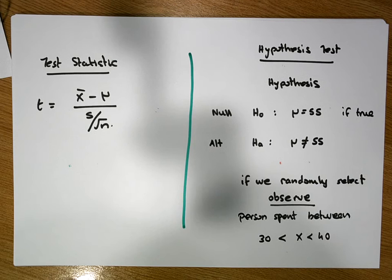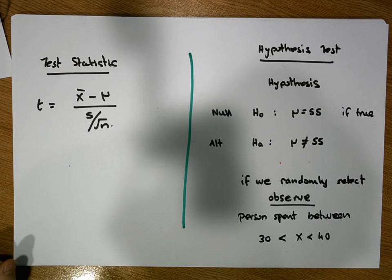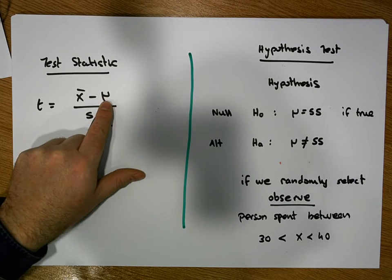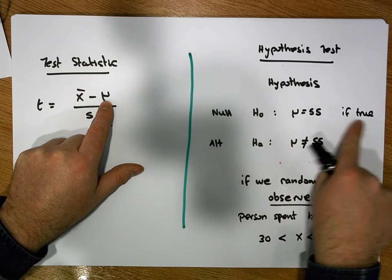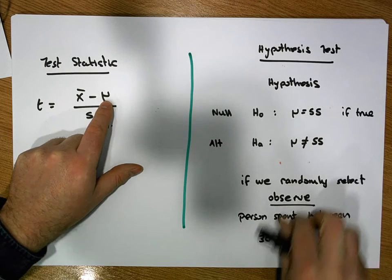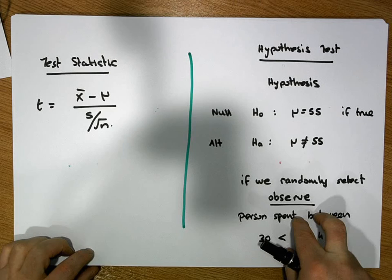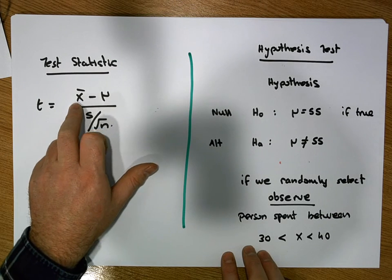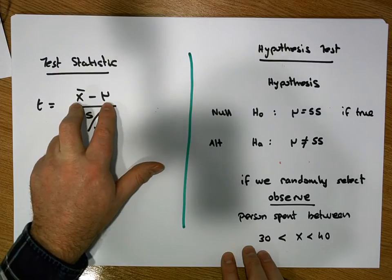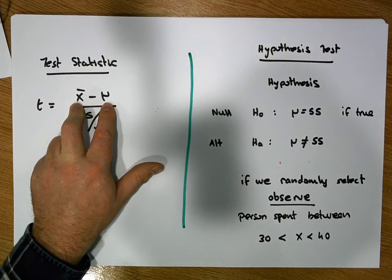So what's happening with the test statistic is this: we have a particular hypothesized position of our distribution that we hypothesize through our null hypothesis. We go off and we capture a piece of evidence, our x bar, our sample evidence, and we calculate the distance between our sample and our hypothesized center of our distribution.